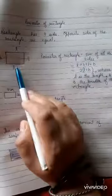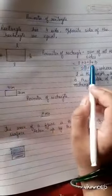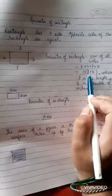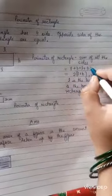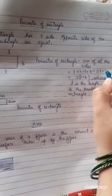So L plus B plus L plus B. How many times L? 2 times 2, L plus B. Here we can write 2L plus 2B.